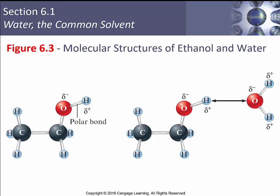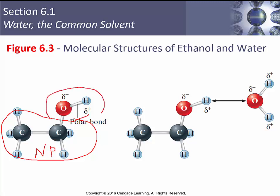Let's look at the solubility of ethanol — drinking alcohol — in water. The hydrocarbon part of the molecule is non-polar, but ethanol has an OH group with a polar bond between hydrogen and oxygen, giving it a partial positive and partial negative end. This polar part of the molecule is able to interact with polar water through hydrogen bonding between the partial negative on water and the partial positive on the hydrogen. We'll talk about hydrogen bonding in much greater detail in subsequent chapters.